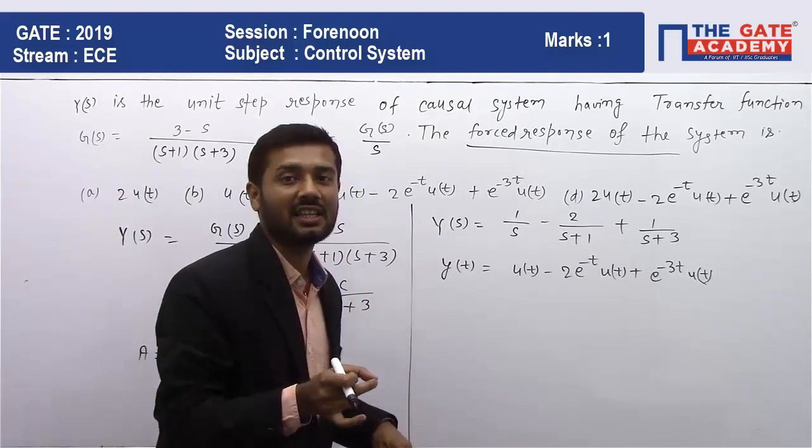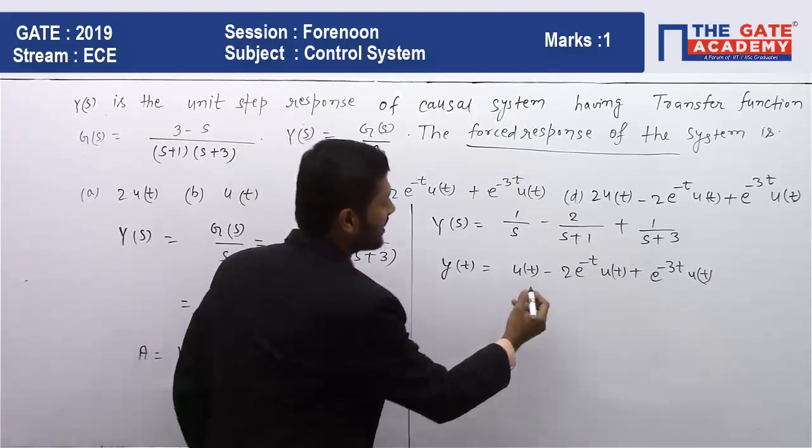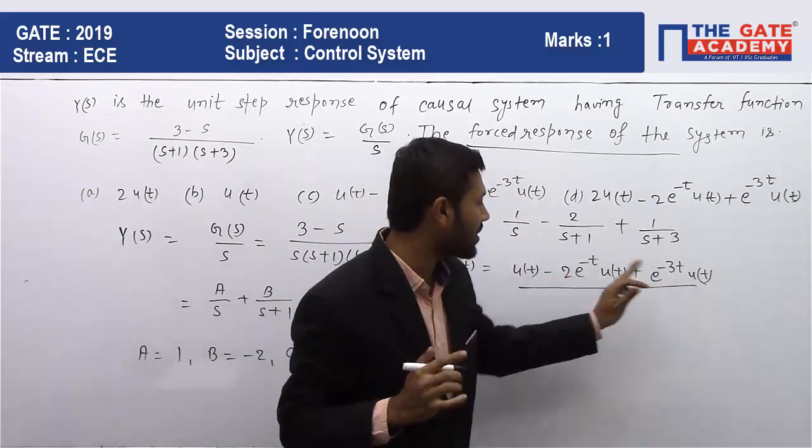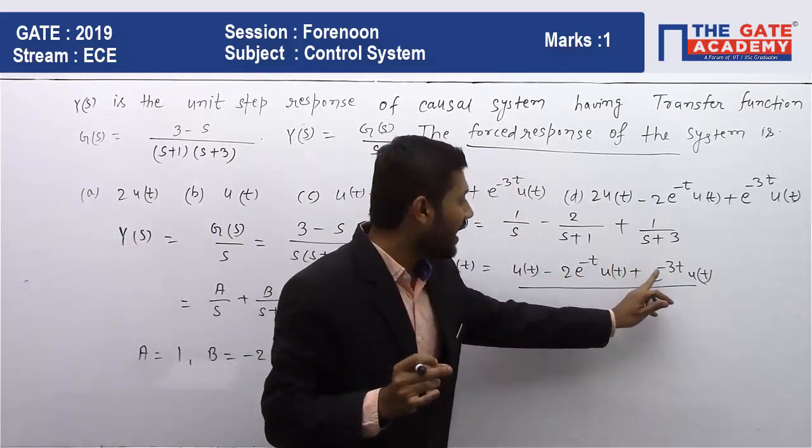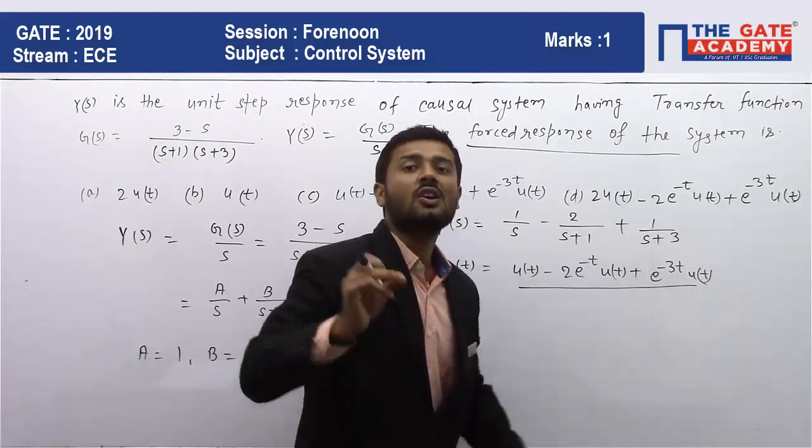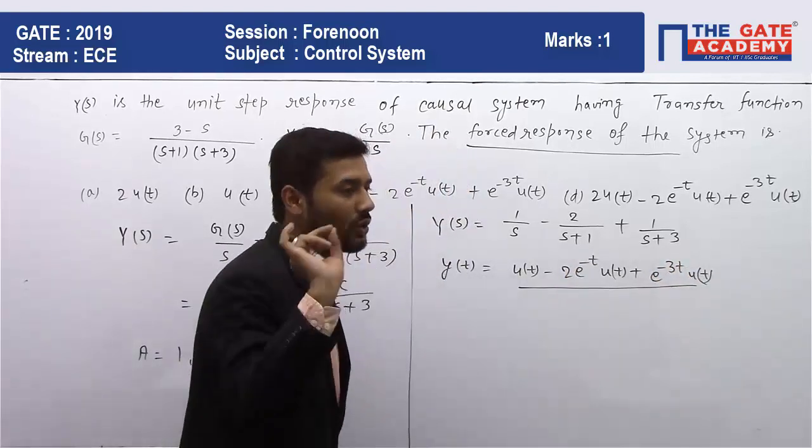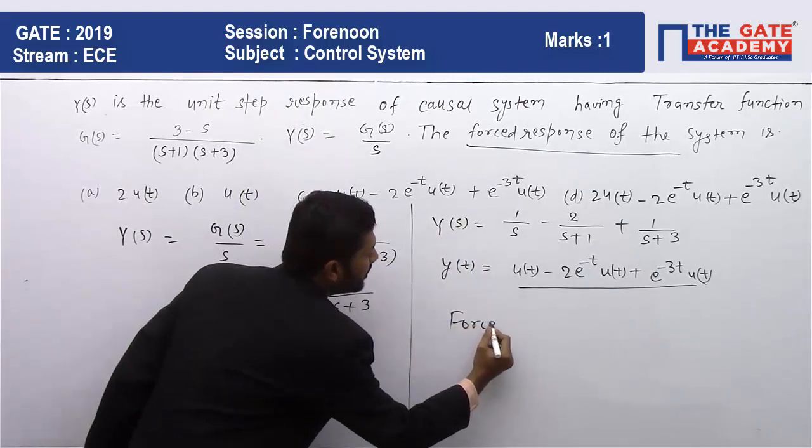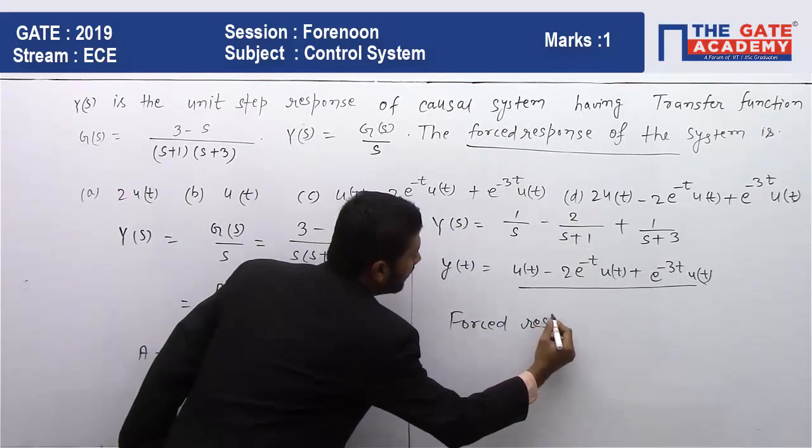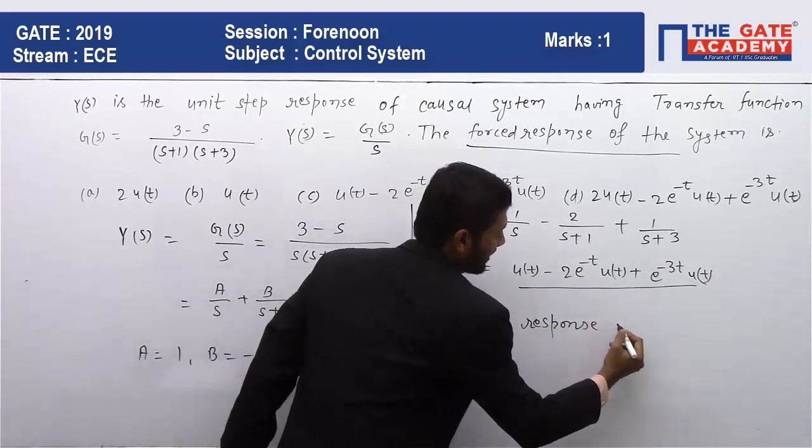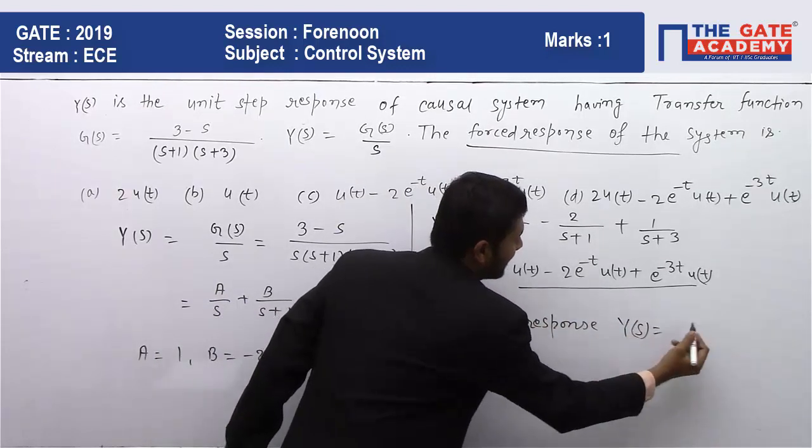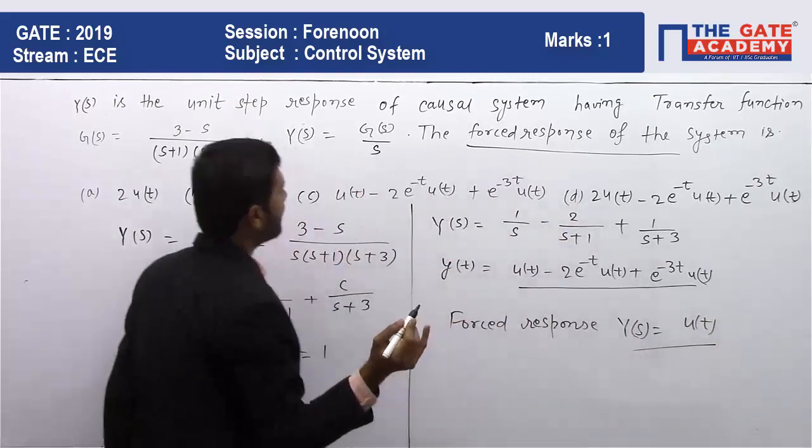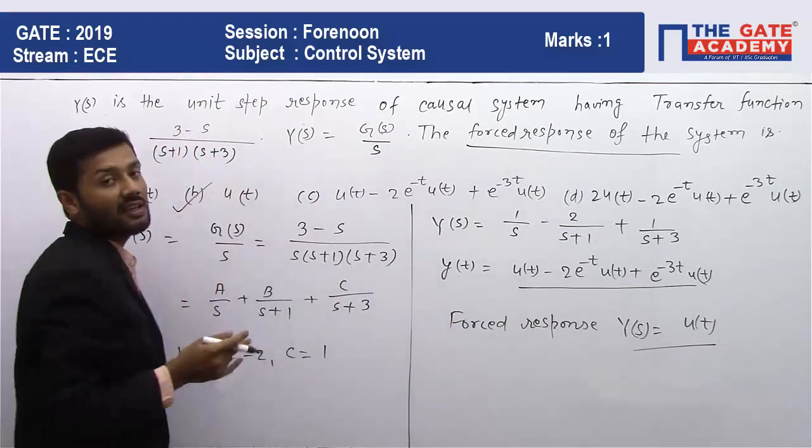So in this equation we have three terms. Both terms e^(-t)u(t) and e^(-3t)u(t) will go to zero as time t tends to infinity. So our forced response of this system Y(s) is nothing but u(t) only. So option B is the correct answer.